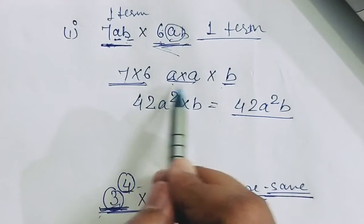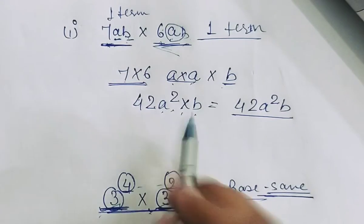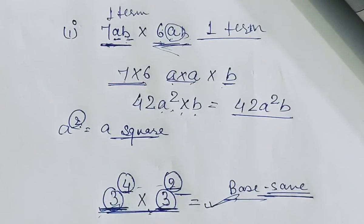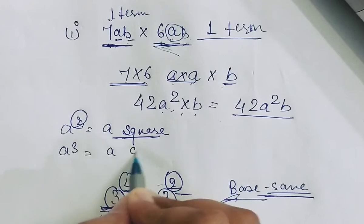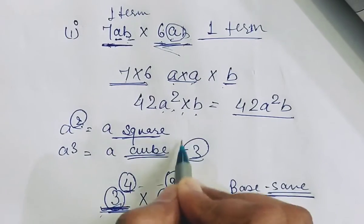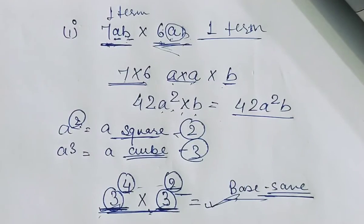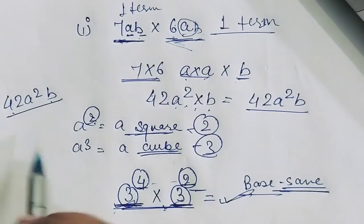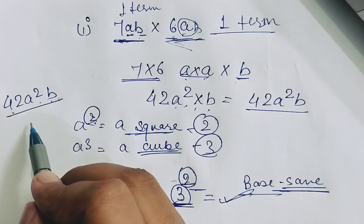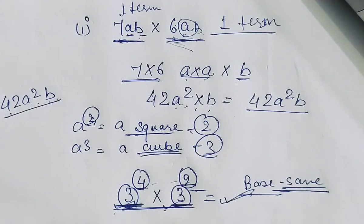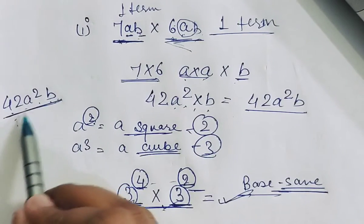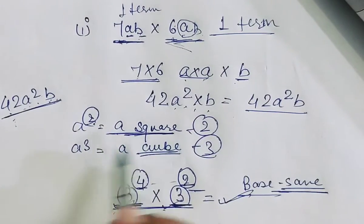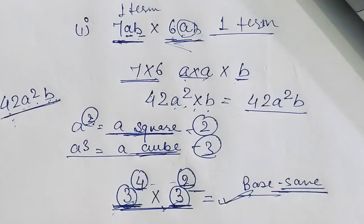7 × 6 = 42, a × a = a², times b, so we get 42a²b. Also note that a to the power 2 is called a square, which means double. If a has power 3, we call it a cube, meaning 3. So 42a² b can also be written as 42 a to the power 2 b — both mean the same thing. If a has power 2, it can be read as a square; if a has power 3, it can be read as a cube.